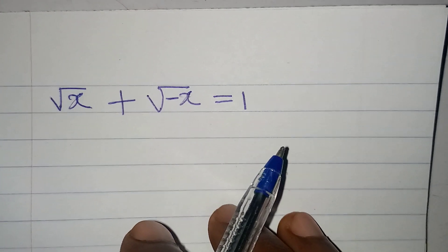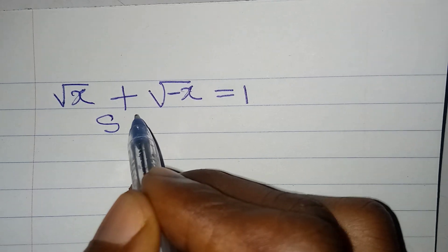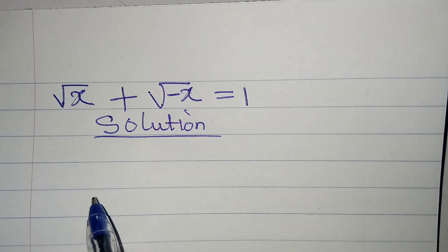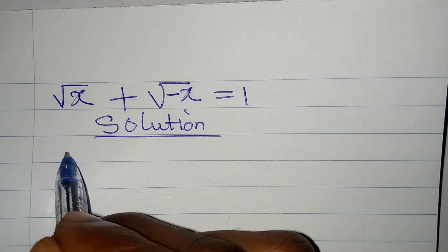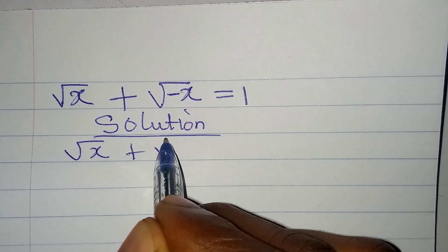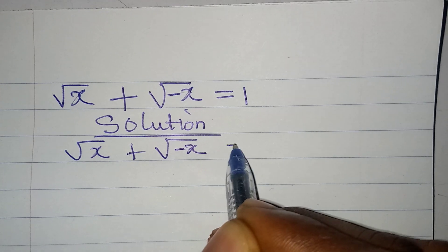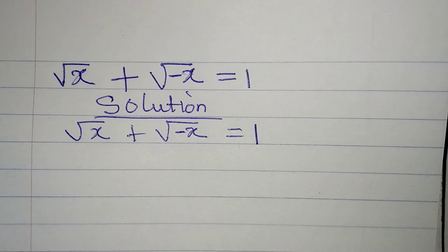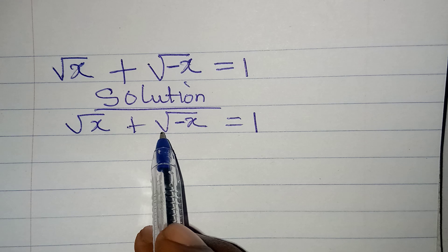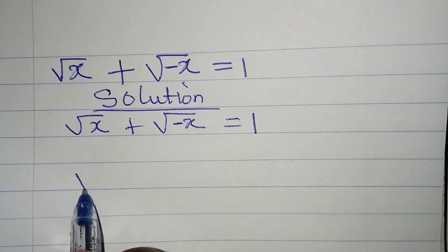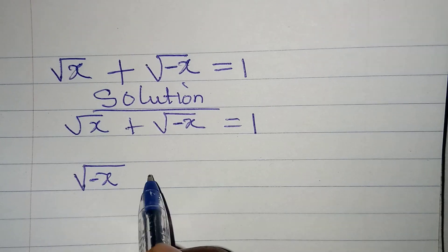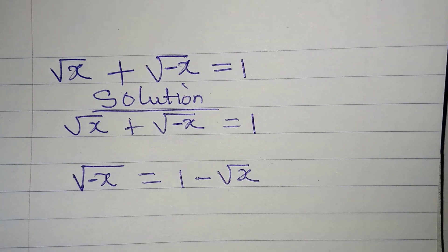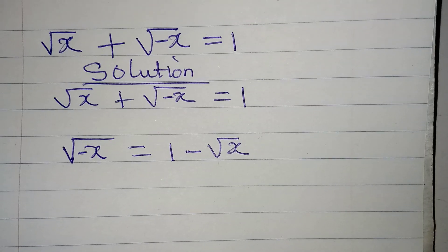Hello everyone, let's solve this Olympiad mathematics problem. We are to find the value of x in √x + √(-x) = 1. The first step I'm going to take is to make √(-x) the subject, so I'm going to have √(-x) equal to 1 minus √x.